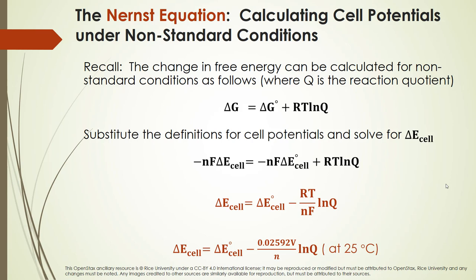Reminding ourselves: the change in free energy can be calculated for non-standard conditions using the equation we saw in the thermodynamics chapter. The free energy under non-standard conditions equals the standard free energy plus a correction term, RT times the natural log of Q, where Q is the reaction quotient.